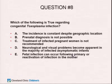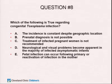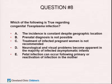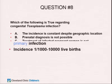Question about congenital toxoplasmosis: which is true? The incidence is constant regardless of geography; prenatal diagnosis is not possible; treatment of infected pregnant women is not recommended; neurologic and visual problems become apparent in the majority of infected asymptomatic babies; or fetal infection can follow primary or reactivation infection. The right answer is D — neurologic and visual problems become apparent even in asymptomatic babies, possibly months or years later.